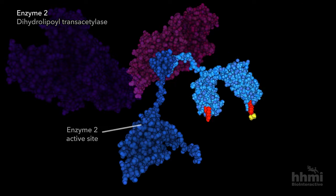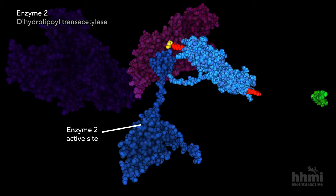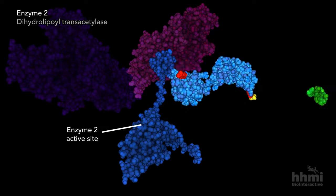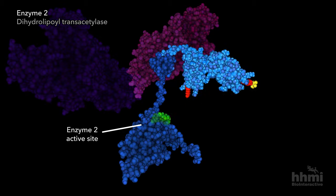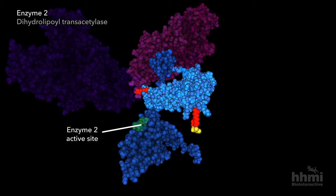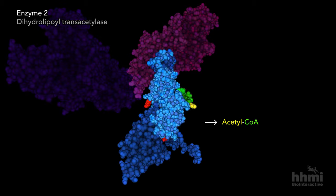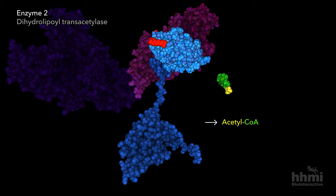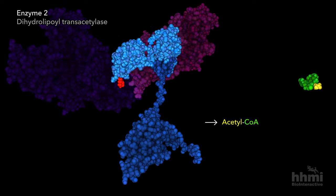In the active site of the second enzyme, the acetyl group is attached to coenzyme A, generating acetyl-CoA — fuel for the citric acid cycle.